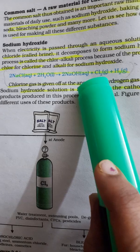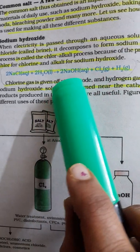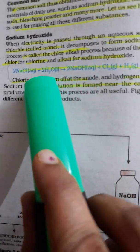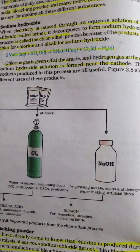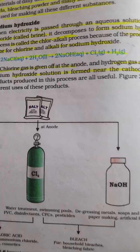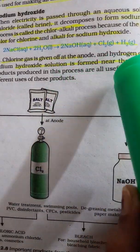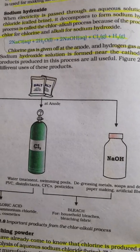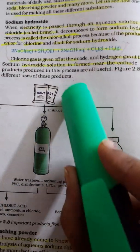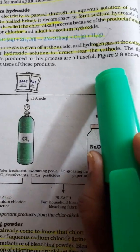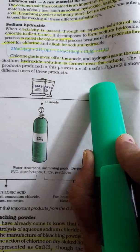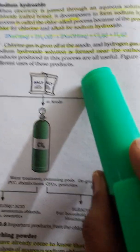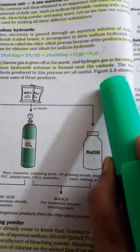Now sodium is balanced and chlorine is also balanced. For hydrogen: on the right side there is 2 + 2 = 4, but only 2 on the left side, so put 2H₂O on the left. Hydrogen is also balanced. Finally, oxygen — it is 2 on the left and 2 on the right, so oxygen is also balanced. That is how you write a balanced equation. Remember: chlorine gas is given off at the anode, hydrogen gas at the cathode, and sodium hydroxide solution is formed near the cathode.